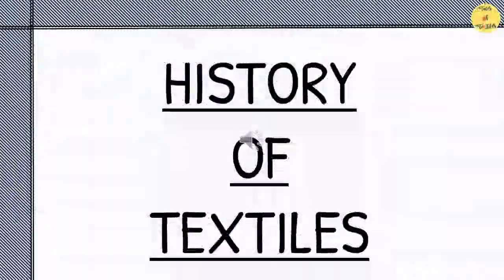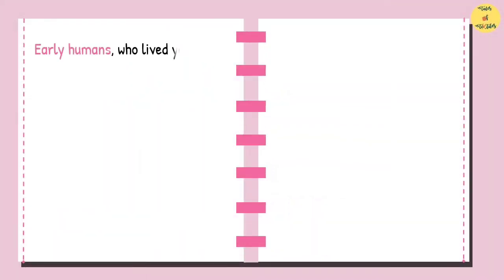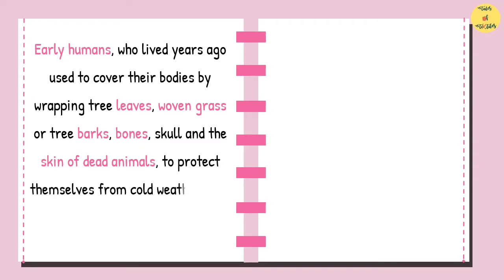History of Textiles. Early humans, who lived years ago, used to cover their bodies by wrapping tree leaves, woven grass or tree barks, bones, skull and the skin of dead animals to protect themselves from cold weather, rain and other natural disasters.